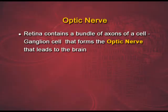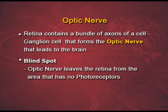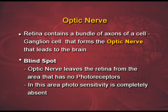This nerve is responsible for taking the images that you sense to the brain and making sense out of them. There is a blind spot — the spot where the optic nerve leaves the retina, from the area that has no photoreceptors. In this area, photosensitivity is completely absent and therefore it is known as the blind spot.